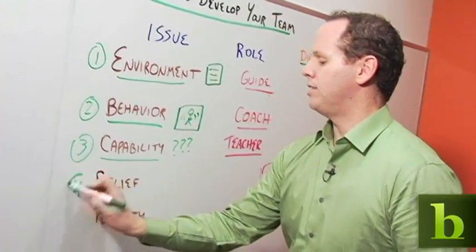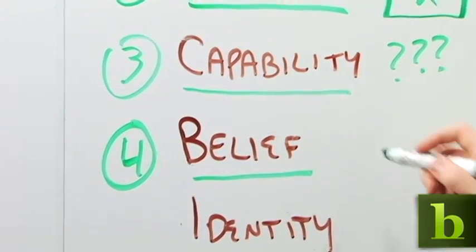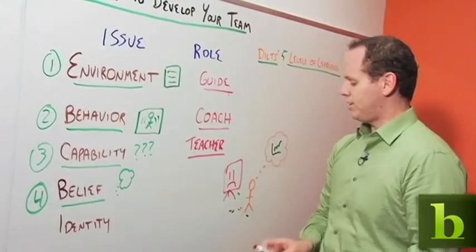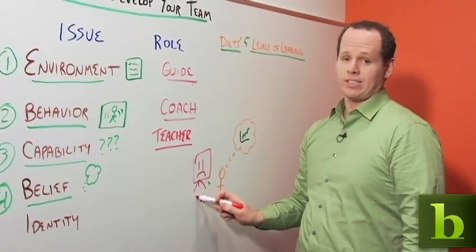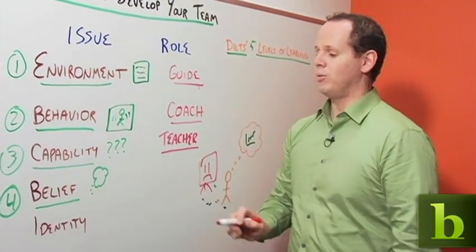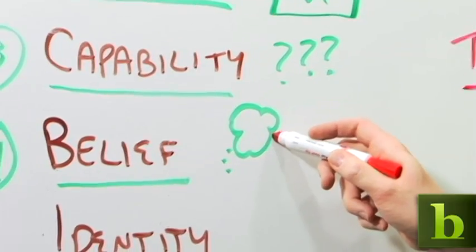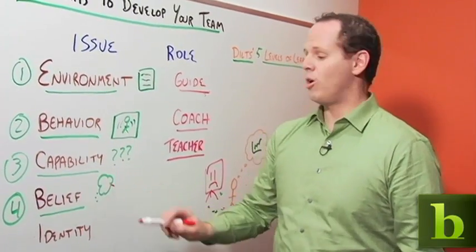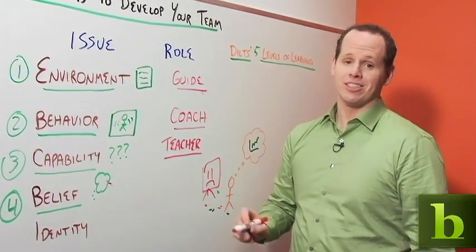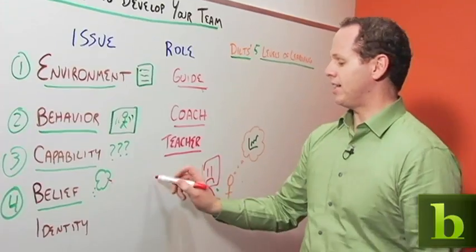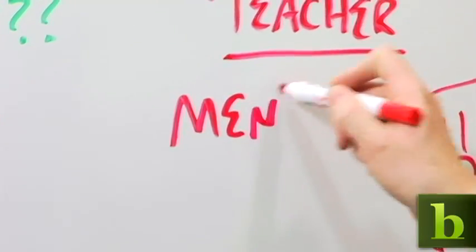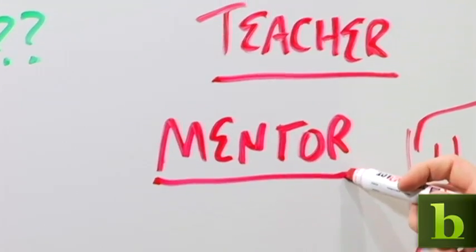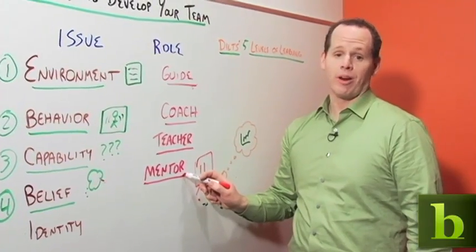The fourth level is the level of belief. Belief is what the person thinks about the situation. So let's say you're talking to this employee about improving presentation skills, and he says, I believe presentation skills are hard. Most people aren't good at them. I'm not good at them, but that's pretty common. Well, that's not exactly a belief that's going to lead to any improvement. In this case, your job is to play the role of a mentor. You want to say to the person, people do get better at presentation skills, and I'm willing to help you become one of those people.